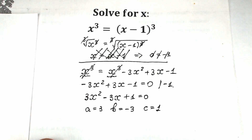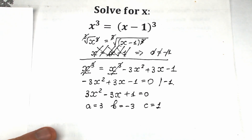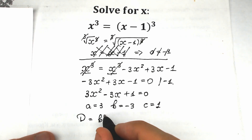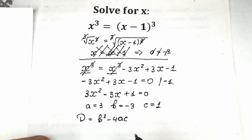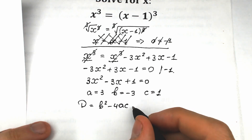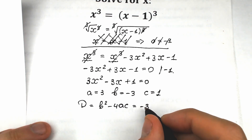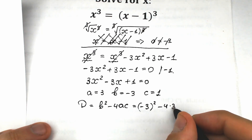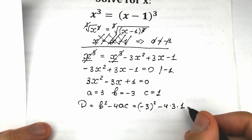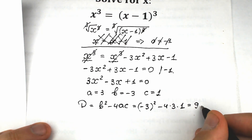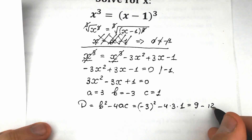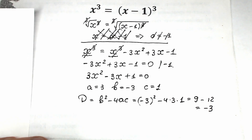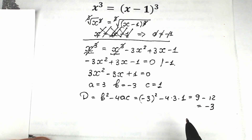From this quadratic equation, we identify the coefficients: a equals three, b equals minus three, and c equals one. Now let's find the discriminant. Discriminant equals b squared minus four ac, which equals negative three squared minus four times three times one, giving us nine minus twelve, which equals minus three.